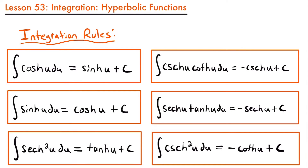Here are the integration rules that reverse those derivative rules. The integral of cosh(u) du equals sinh(u) + c. The integral of sinh(u) du equals cosh(u) + c. The integral of sech²(u) du equals tanh(u) + c. The integral of csch(u)·coth(u) du equals negative csch(u) + c. The integral of sech(u)·tanh(u) du equals negative sech(u) + c. And finally, the integral of csch²(u) du equals negative coth(u) + c.